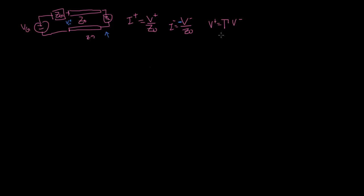We want to find a reflection coefficient, which we'll call capital gamma, that relates the initial incoming wave to the corresponding reflected wave. We also want a transmission coefficient tau, where the voltage at the load equals the incoming voltage V plus times tau. The main purpose right now is to know how to calculate gamma and tau, and also how to draw the equivalent circuit.